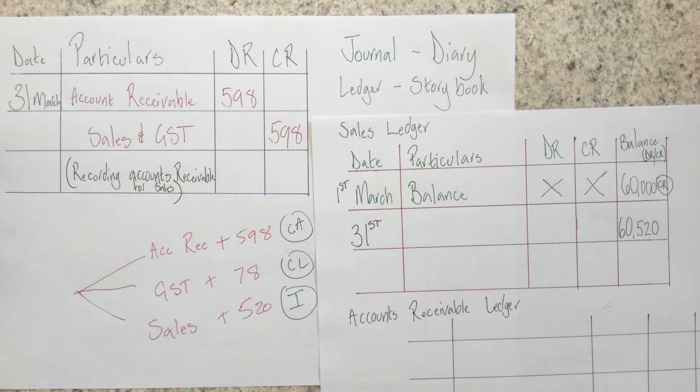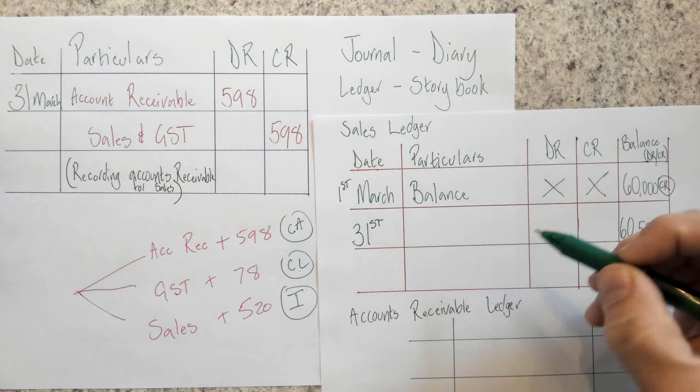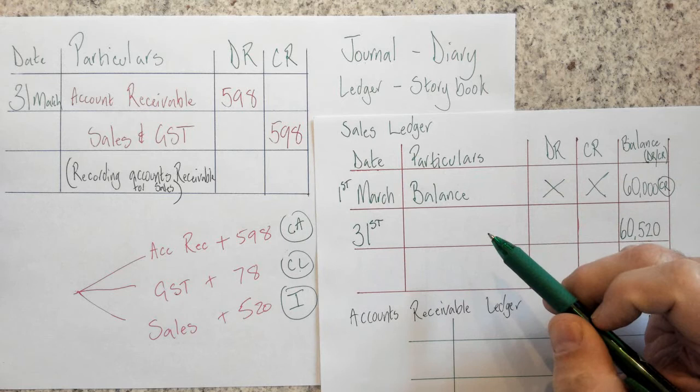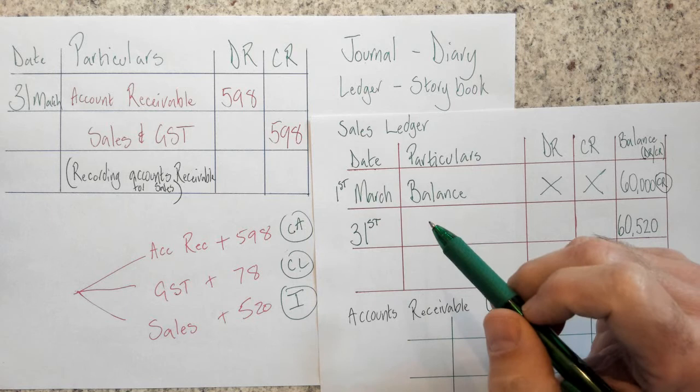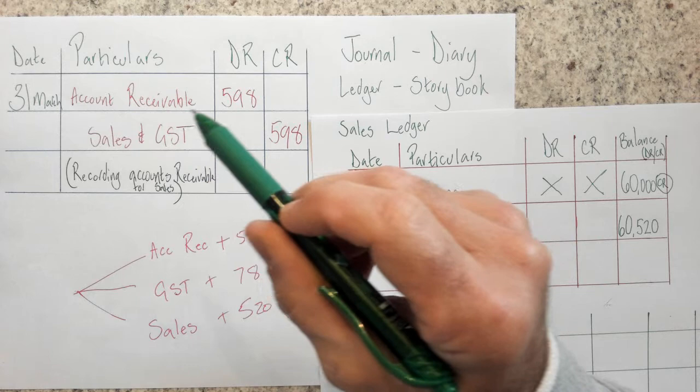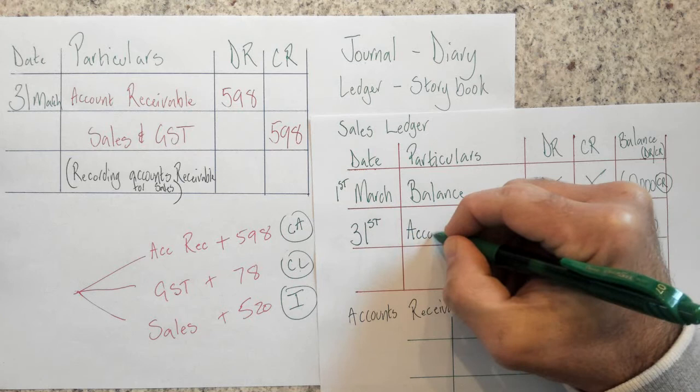So over in my ledger, this is going to be a CR, an all important CR. And then what's happened is I've had my balance day adjustment occur. And from that balance day adjustment, a couple of things have happened. My sales has changed. My sales has gone up by 520. So I've now got a new balance.